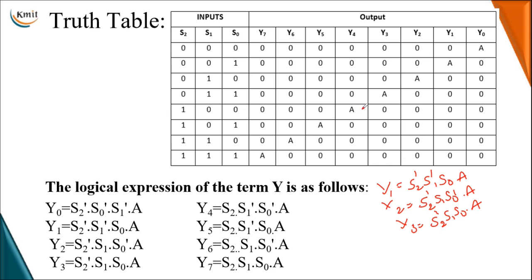When selection inputs are 1,0,0 — the input is transferred to Y4. When 1,0,1 — it goes to Y5. When 1,1,0 — it is distributed to Y6. For Y7, all selection inputs are 1, so without any complement we represent the product term as S2 · S1 · S0 · A. Like this, we design the 1-to-8 demultiplexer.